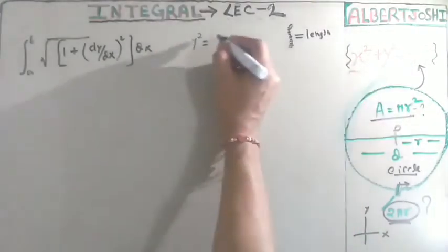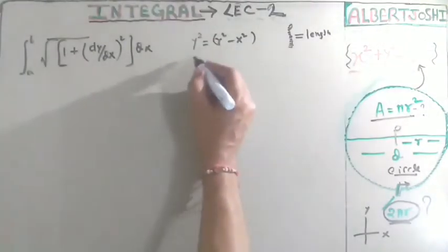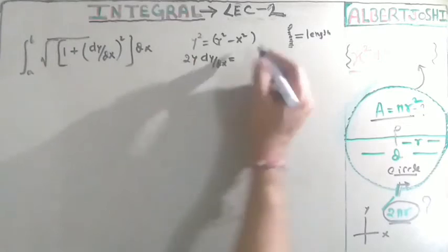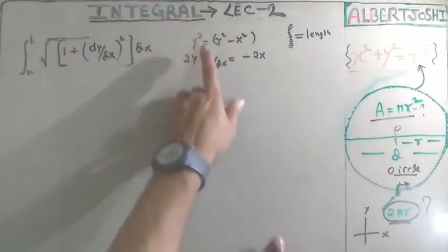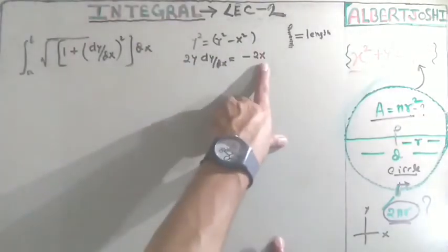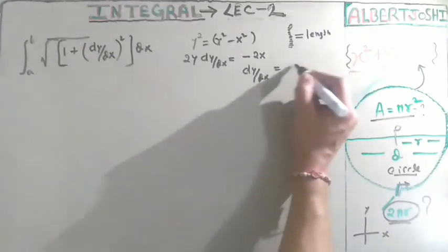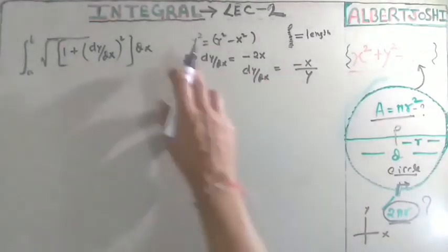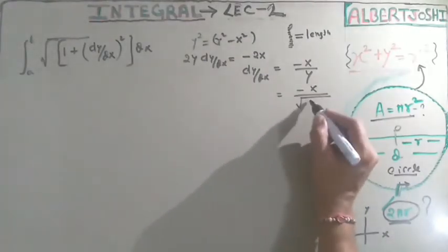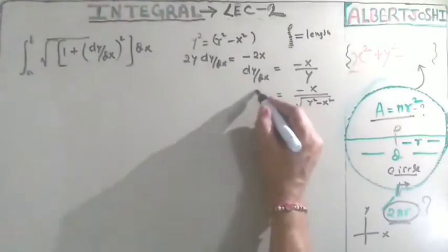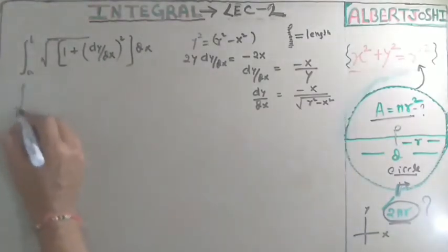From the circle equation, y² = r² − x². Differentiating both sides with respect to x gives 2y·(dy/dx) = −2x. The 2s cancel, so dy/dx = −x/y. We can also write this as dy/dx = −x / √(r² − x²). Now we substitute this dy/dx into the arc length integral.